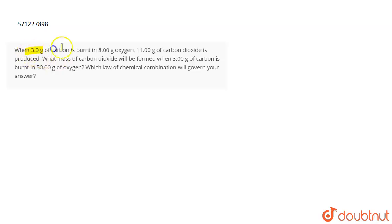The question is when 3 gram of carbon is burnt in 8 gram of oxygen, 11 gram of carbon dioxide is produced. What mass of carbon dioxide will be formed when 3 gram of carbon is burnt in 50 grams of oxygen and also which law of chemical combination will govern your answer.